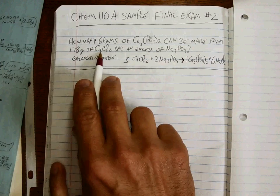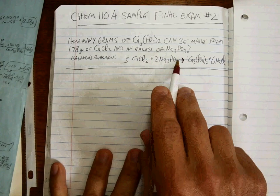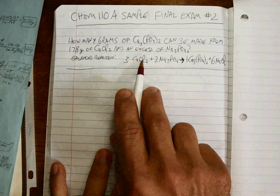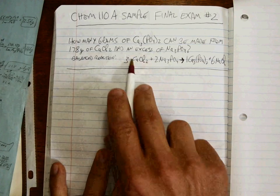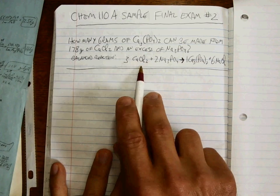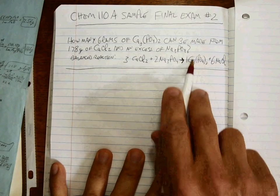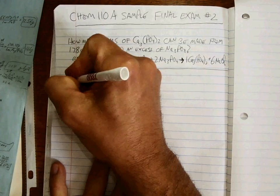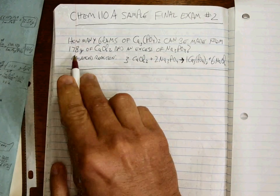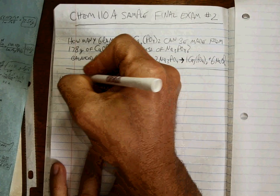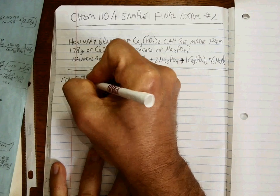We've got one number in our problem. The fact that we have excess of one reactant means that all 178 grams of calcium chloride will react and therefore we know exactly how many grams of this can be made. Start with the one number in the problem that you're given.